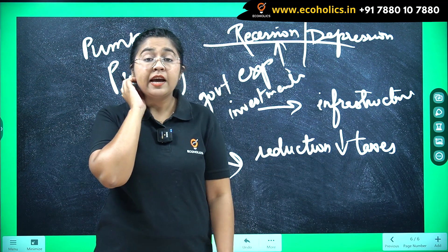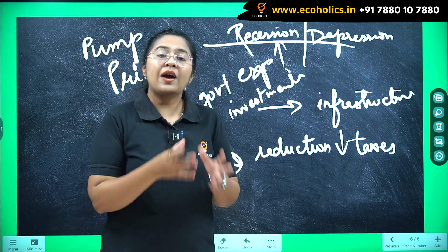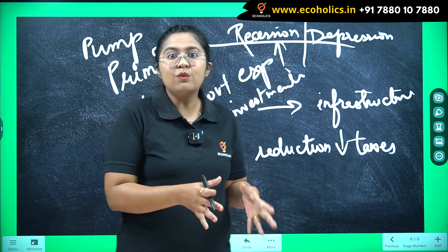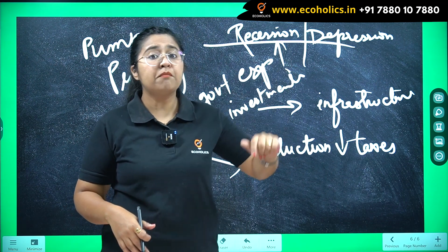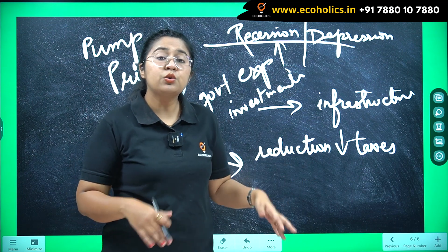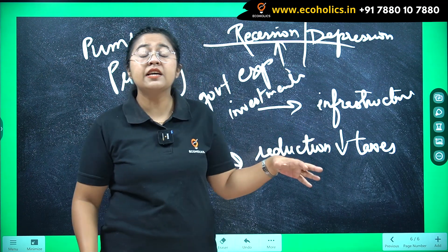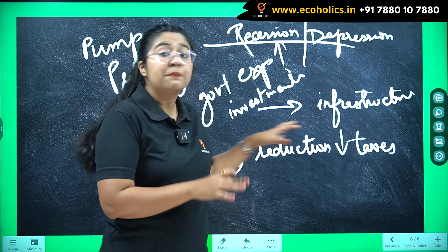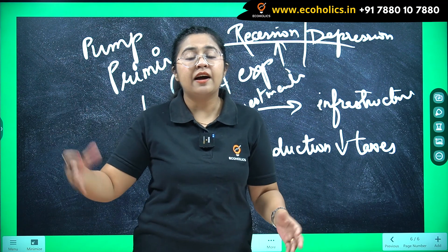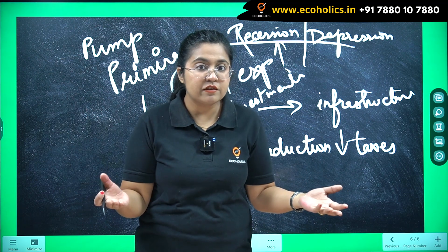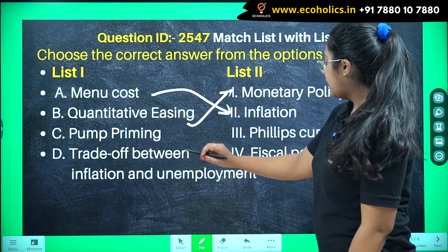During recession or depression, when the economy faces a situation where liquidity is structurally absent, along with problems in employment and other macroeconomic issues, the government infuses money through various investments. Not only will the flow of money increase, but the government's duty is also to raise employment opportunities. Through infrastructure investments, government expenditure in different projects raises employment, which also leads to long-run purchasing power increases for individuals. This is why pump priming is associated with fiscal policy.